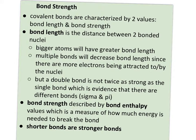Bond strength is another important characteristic of covalent bonds, and it's tied in closely with bond length. Bond length is the distance between two bonded nuclei, so bigger atoms will have greater bond length. Multiple bonds will actually decrease bond length since there are more electrons being attracted to and by the nuclei, and also because the orbitals where the electrons are being shared force the atoms closer together in order for that sharing to take place.